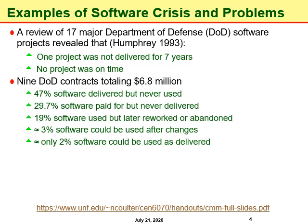According to Humphrey, a review of 17 major Department of Defense software projects revealed that one project was not delivered for 7 years, and in fact no project was on time. Mostly the reasons for such failures were managerial. Additionally, for 9 DoD contracts totaling $6.8 million, 47 percent of software was delivered but was never used, reflecting weaknesses in requirement engineering where genuine client needs were not ensured.